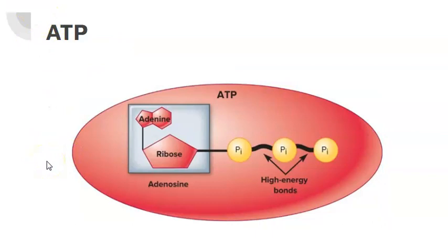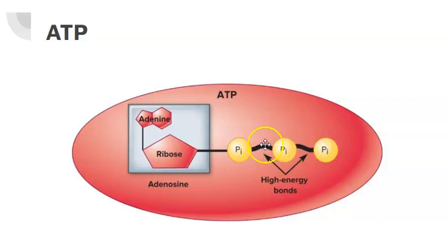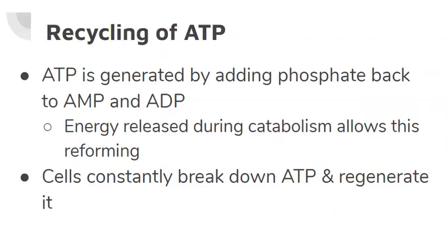This picture is showing you what ATP looks like. Here you have the organic compound adenine connected to a ribose sugar to form adenosine. The adenosine is connected to three high-energy phosphate bonds that once broken produce energy, because the bonds between them are what produce energy. Here are your three phosphates, and between them are your high-energy phosphate bonds. ATP is regenerated by adding phosphate back to AMP and ADP. The energy released during catabolism allows phosphate to reform a high-energy bond with AMP and ADP to form ATP, because AMP contains one phosphate, ADP contains two phosphates, and to form ATP you need three phosphates.